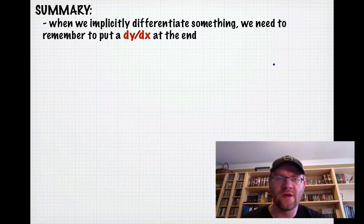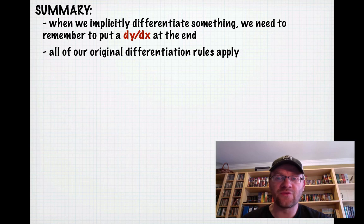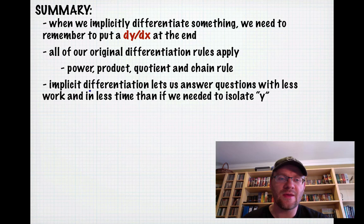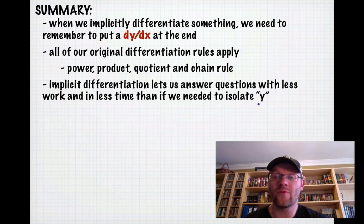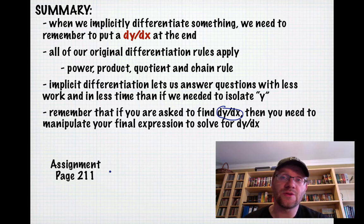In summary, when we implicitly differentiate, we need to remember to put dy over dx at the end of anything that was a y. All of our original differentiation rules apply: the power rule, product rule, quotient rule, and chain rule. Implicit differentiation lets us answer questions with less work and in less time than isolating y first. Remember that if you're asked to find dy over dx, you need to manipulate your final expression and solve for dy over dx. Your assignment is on page 211 in your text. Good luck, and we'll see you in class.